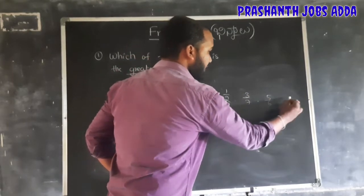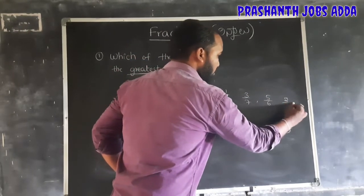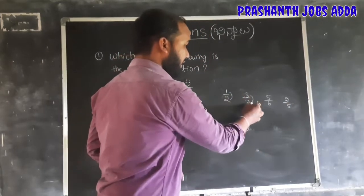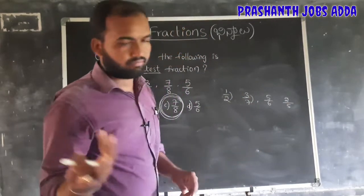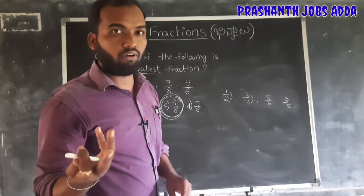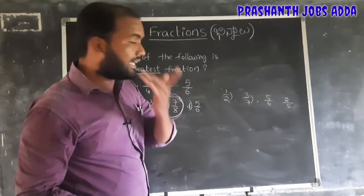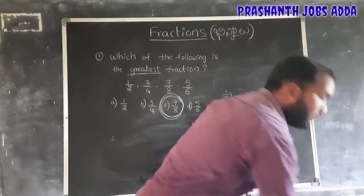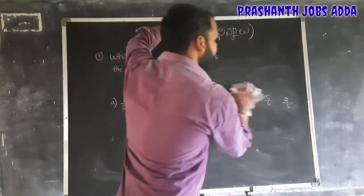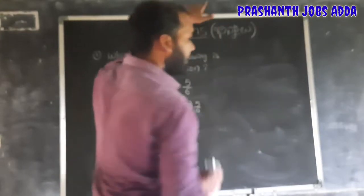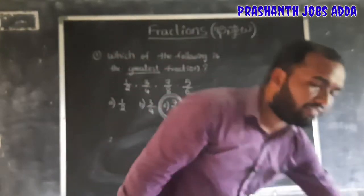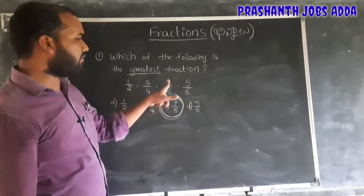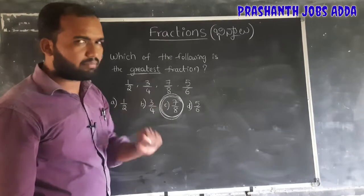But if fractions like 5 by 6 and 2 by 5 are given, the difference is 1 for one and 4 for another — the differences are not the same. So this shortcut logic cannot be applied in that case. Move to the fourth method.